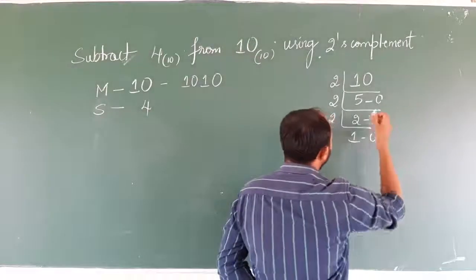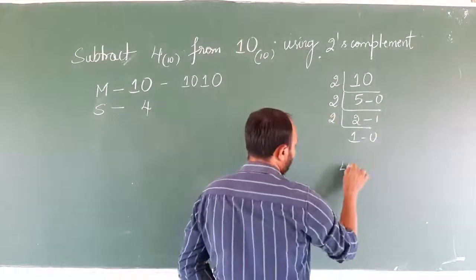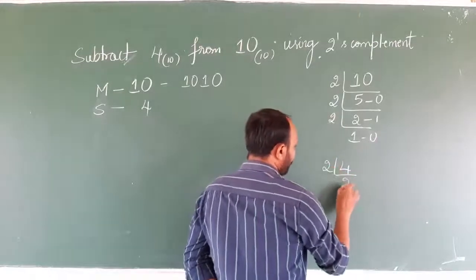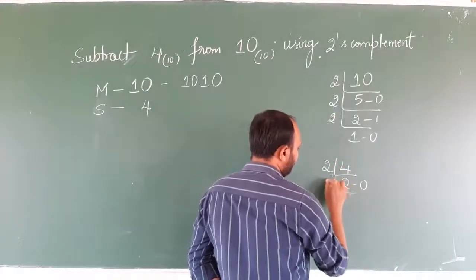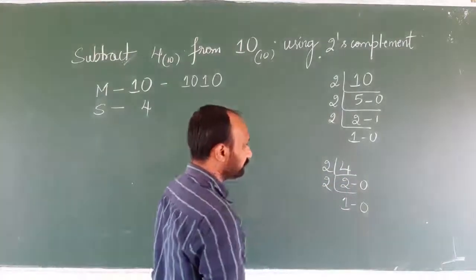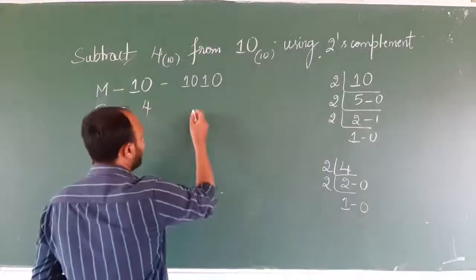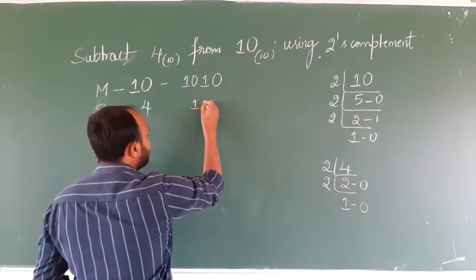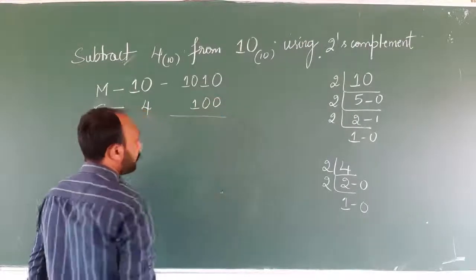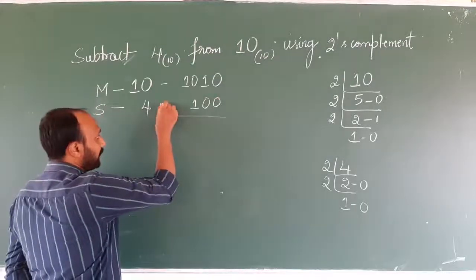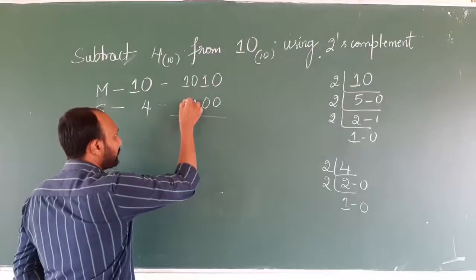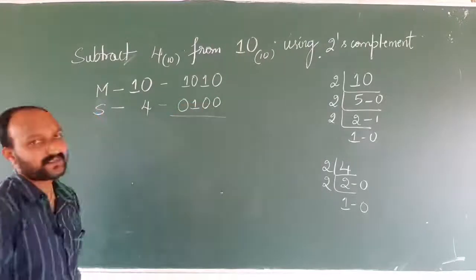Next, what is the binary equivalent of 4? Two twos are 4, remainder 0; two ones are 2, remainder 0. So the binary equivalent is 100. As you can notice, one bit is missing here — there is one vacant space. Let us fill this space with 0, making it 0100.